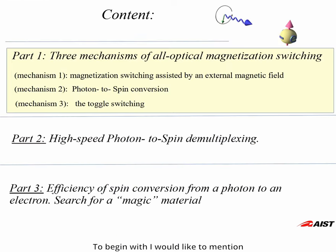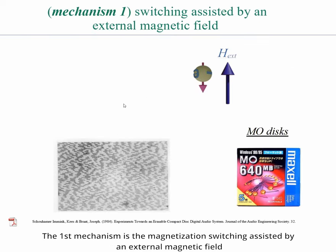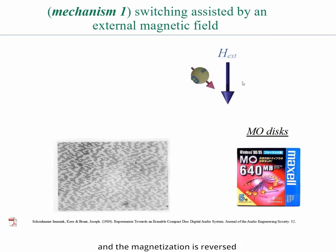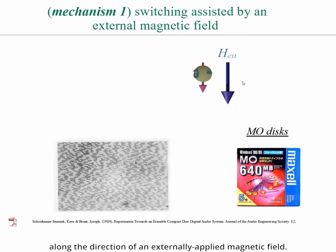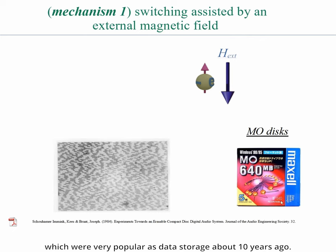To begin with, I would like to mention three known mechanisms of all-optical magnetization reversal. The first mechanism is the magnetization switching assisted by external magnetic field. In this case, a light pulse triggers the magnetization switching, and the magnetization is reversed along the direction of externally applied magnetic field. This mechanism had been used for data recording in a MO disk, which was very popular as data storage about 10 years ago.